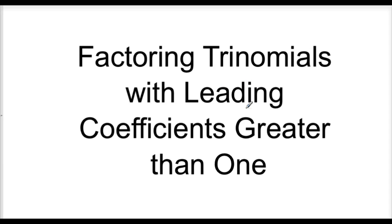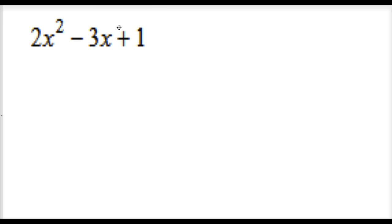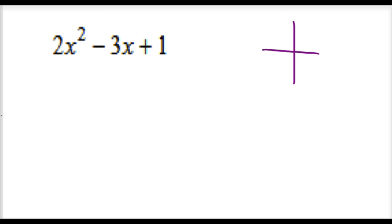Factoring trinomials with leading coefficients greater than 1. Our first example, 2x squared minus 3x plus 1. We need to factor this trinomial. This is a quadratic function crossing the x-axis at two different spots. So we want to get this into two factors or two parentheses. That's our main goal here.